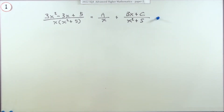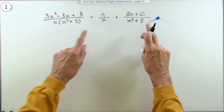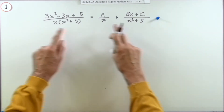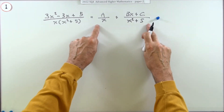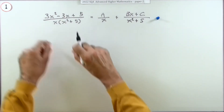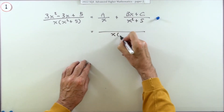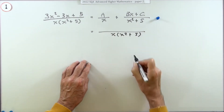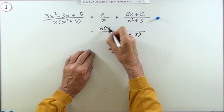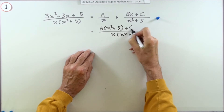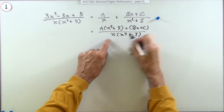Just setting that up gets the first mark. Now these are meant to be identical — it's an identity. But you won't be able to compare them properly unless you make them look the same. The first step is to get one of them into exactly the same form as the other, in other words, add these fractions together. So that gives x times x squared plus 5, and then Bx plus C multiplied by x.